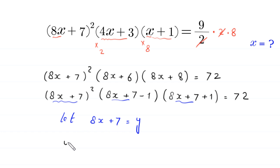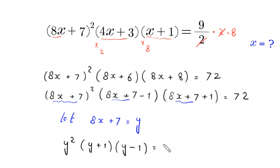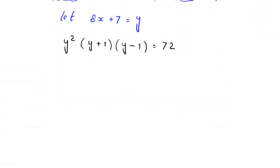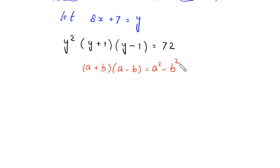Substituting, the equation becomes y² times (y+1) times (y−1) equals 72. Now by using the algebraic identity (a+b)(a−b) = a²−b², this becomes y² times (y²−1) equals 72.